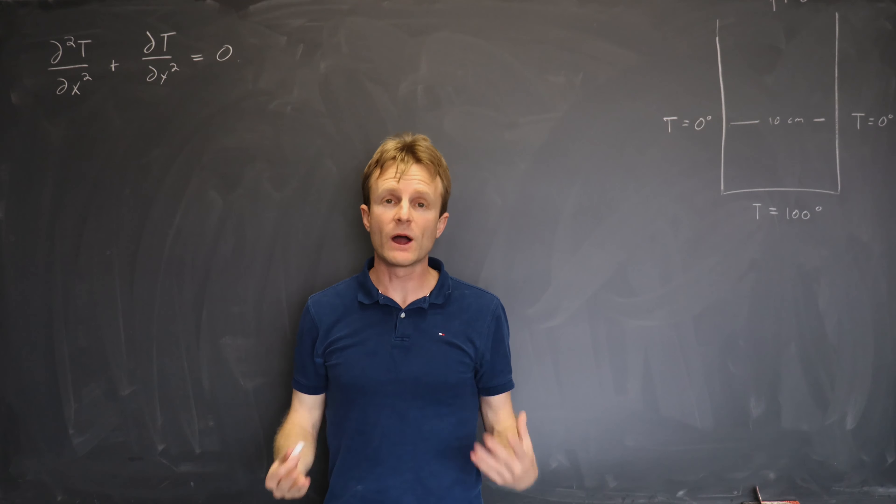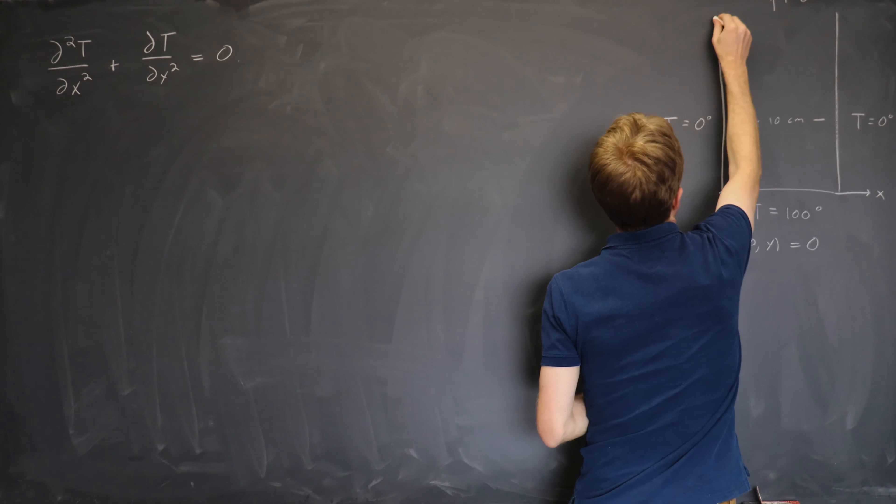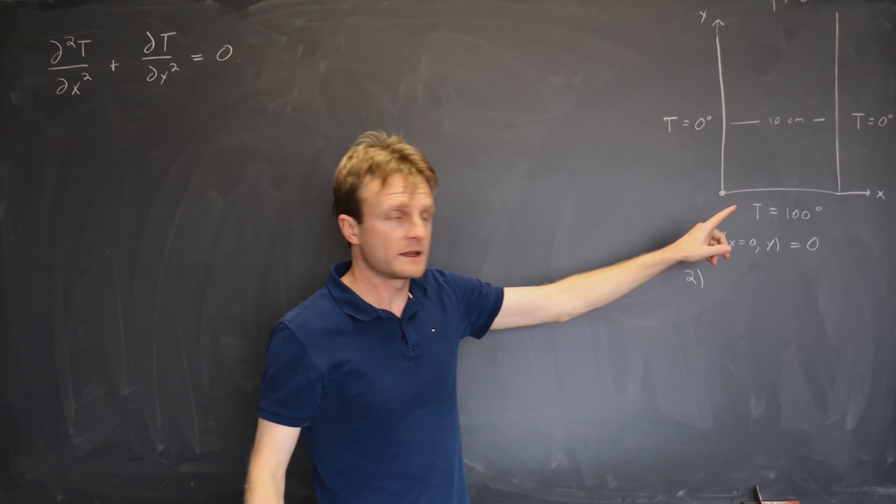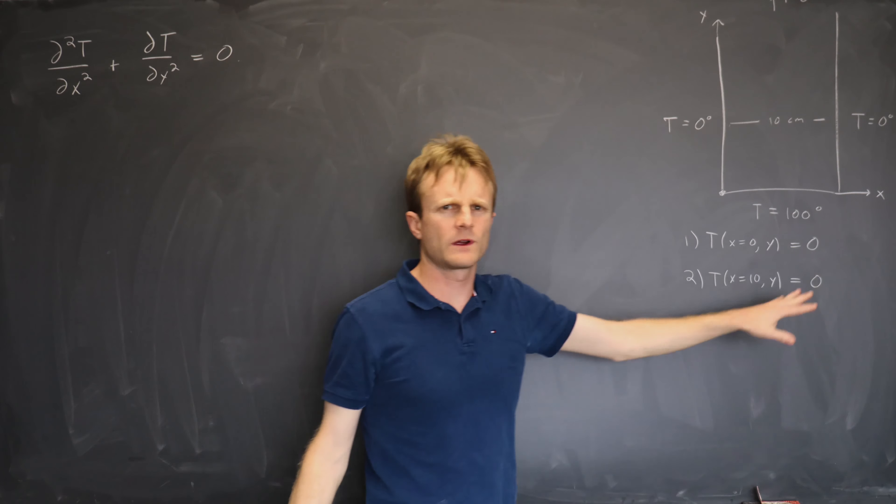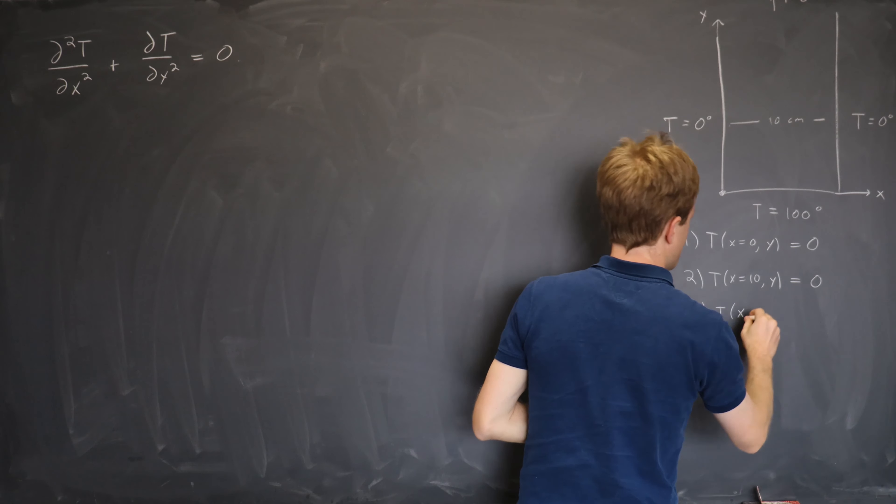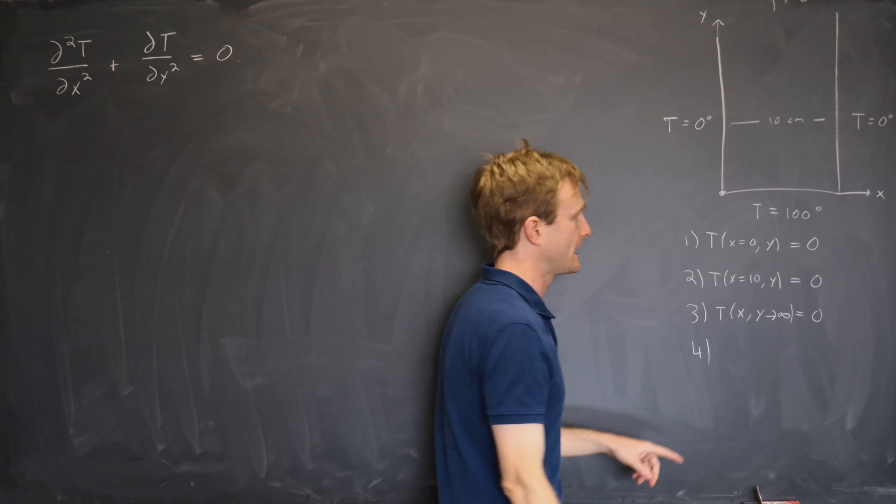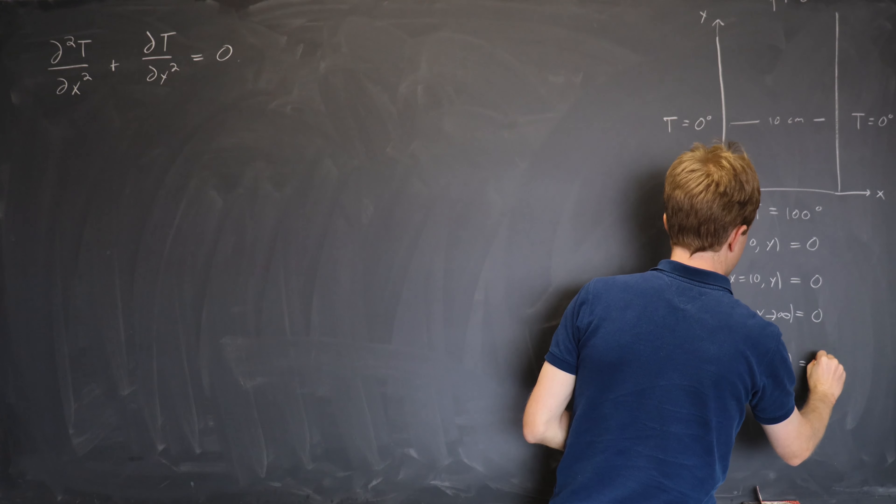On this left boundary here, let's call that x equals 0. At any y, the temperature has to vanish. So I've put the origin of my axis here, I've called this the x-axis and this the y-axis. That's condition 1 for the left boundary. The right boundary says that T of x equals 10 and y equals 0. The far away boundary says the temperature at any x but y getting very large must be 0. And finally, I'm holding the temperature at 100 down here on the x-axis, so T of x, y equals 0, must be 100.